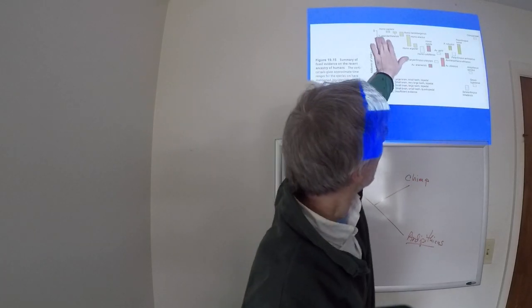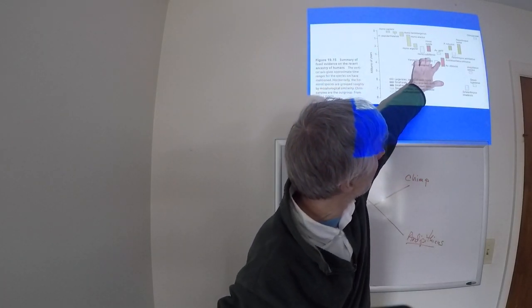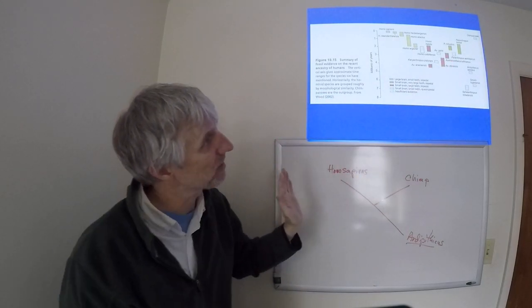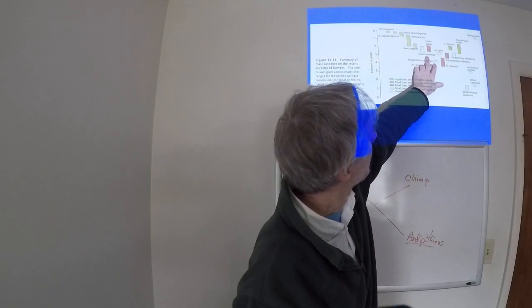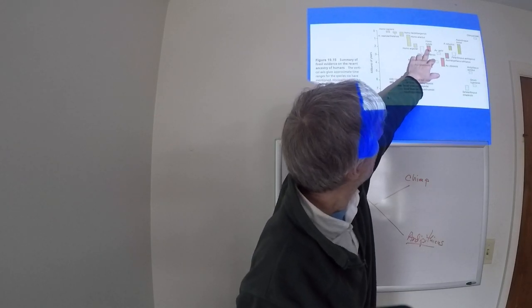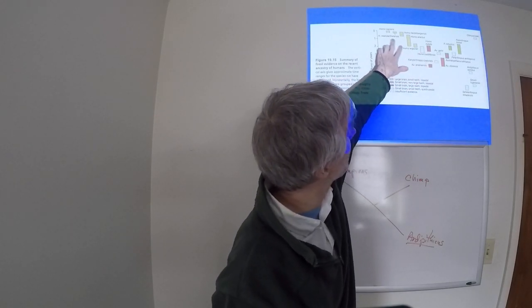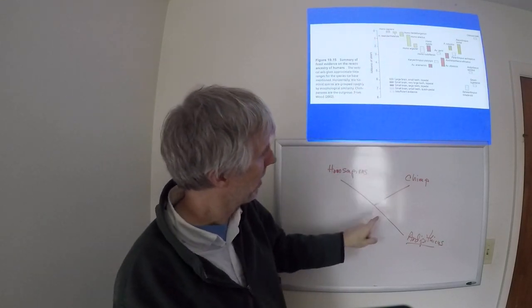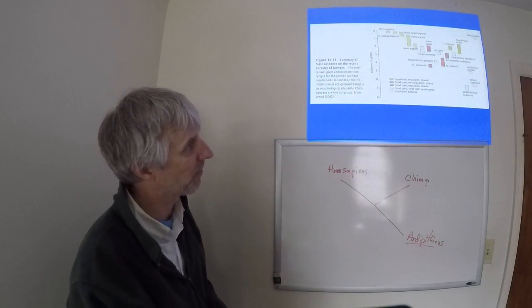So about where these two lineages come together would be the Australopithecus, and then Paranthropus leads to the chimp lineage, whereas Homo rudolfensis, Homo habilis, Homo ergaster, Homo heidelbergensis, and Homo neanderthalensis are in this part of the phylogenetic tree.